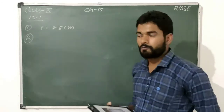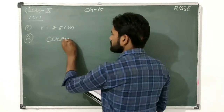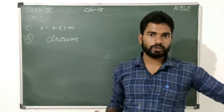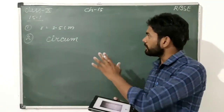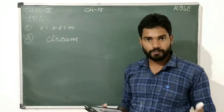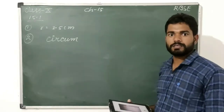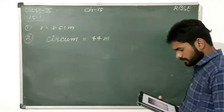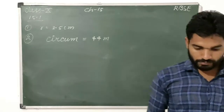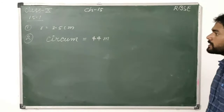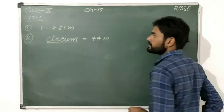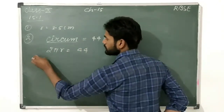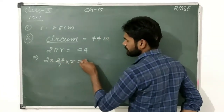Question 2: the circumference of a wheel is 44 meters. Since a wheel is always circular, the circumference equals 44 meters. So we have: 2πr = 44, which gives 2 × (22/7) × r = 44.